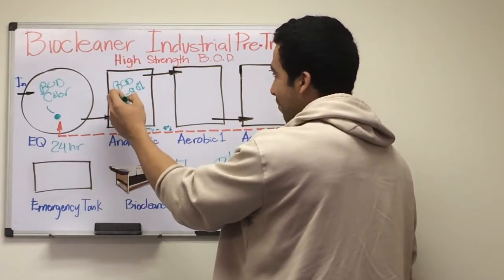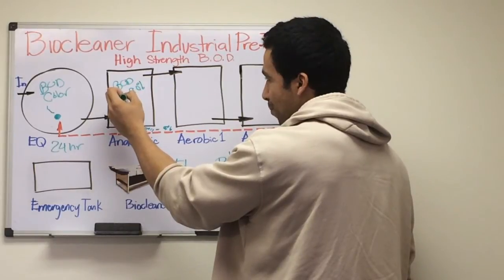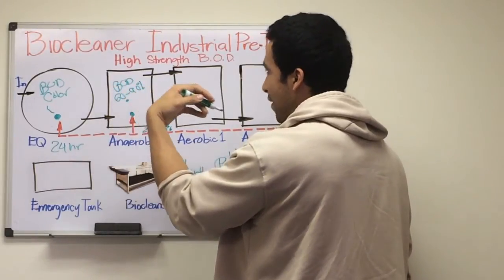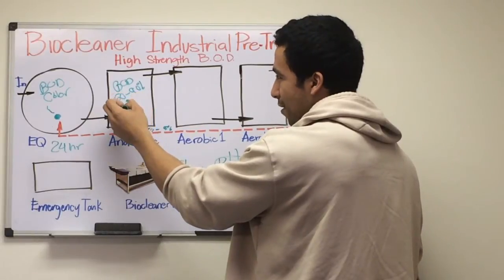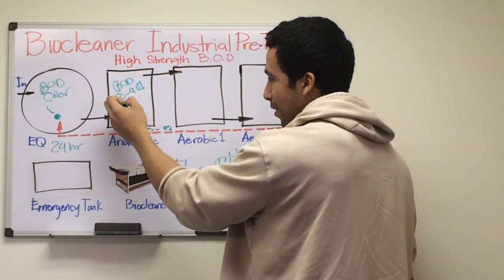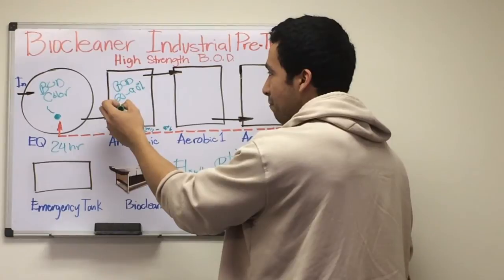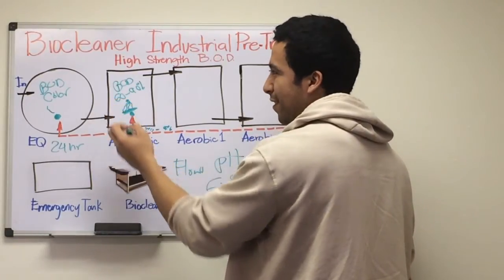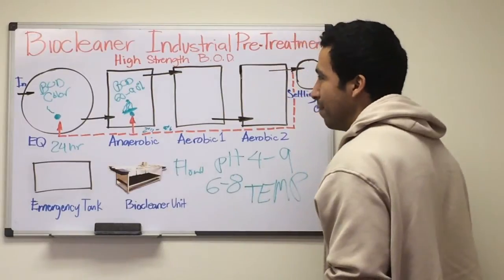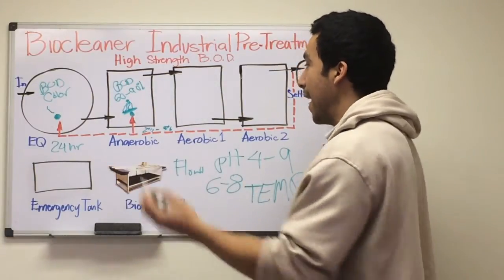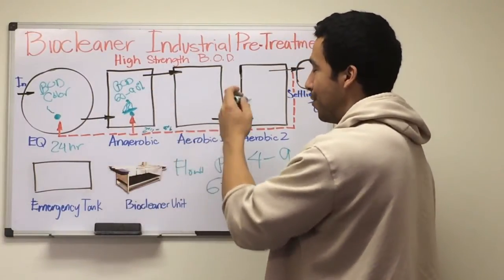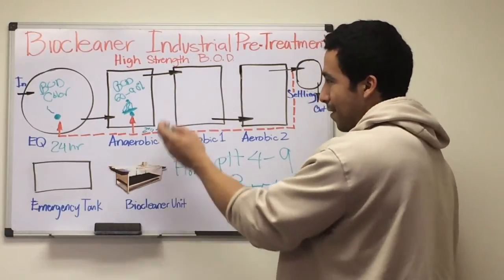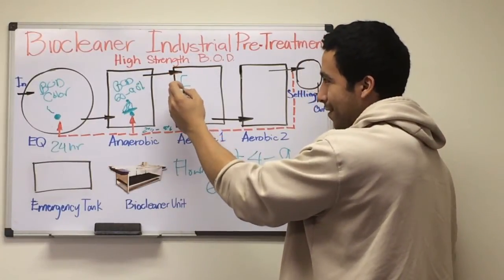Our microbes here are going to break down nitrogen and phosphorus, and it will settle down. Usually for phosphorus, you may have to recover every several years at minimum. After anaerobic treatment, we go to two zones of aerobic treatment, and in these two zones we're going to install our portable bioreactors.